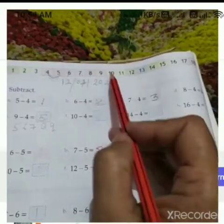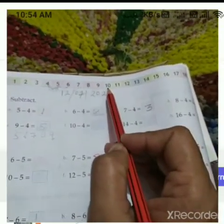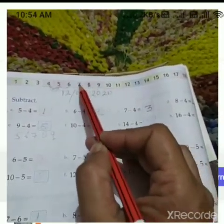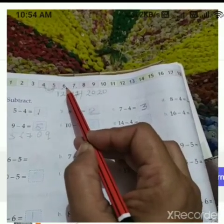10 तक कां करना है? 4. This is our 10. We have to minus 4: 1, 2, 3, 4. What will come? 6. 10 minus 4 is equal to 6.